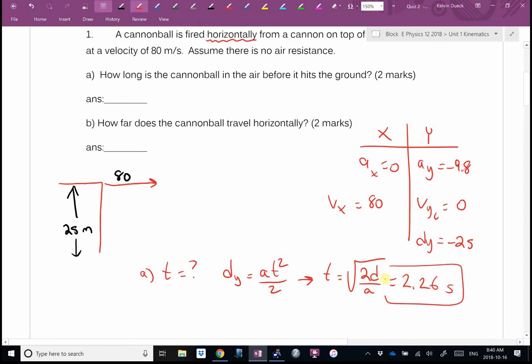If I crunch the numbers: two times negative 25 divided by negative 9.8, square root, you get 2.26 seconds. If you got that you get two out of two. Otherwise I would give half marks for seeing the equation, seeing that dy initial was zero because that's the key to solving the question.